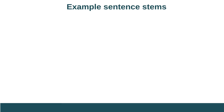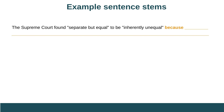So let's take a look at what you might see in a Quill Reading for Evidence activity. Let's say that you just read a passage about the landmark 1954 U.S. Supreme Court case Brown v. Board of Education. After you're done reading that passage, you might see the following sentences: The Supreme Court found separate but equal to be inherently unequal because...